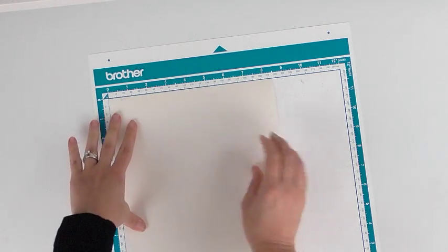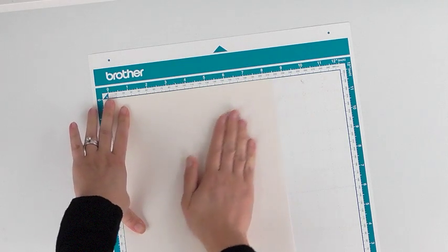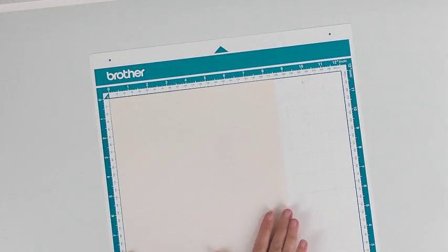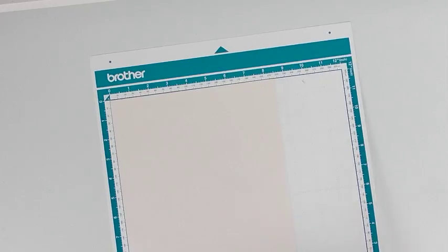However, if you're cutting out individual letters you definitely want to flip your vinyl over so that you're cutting just through that and not through that protective cover that's going to help you transfer those letters onto your garment.